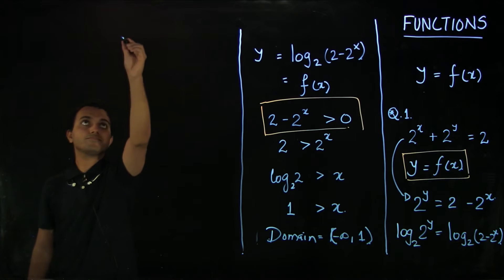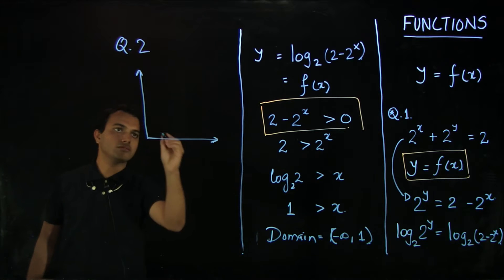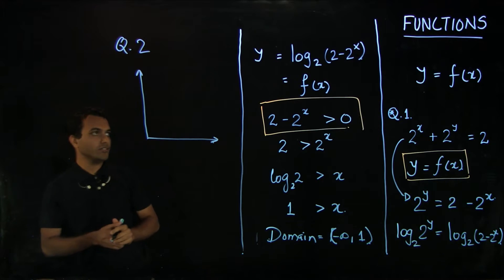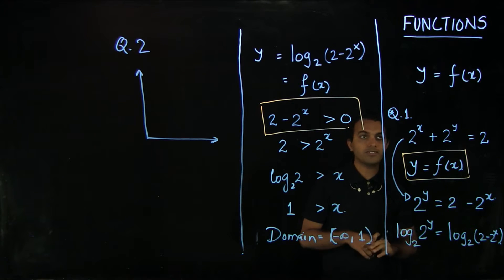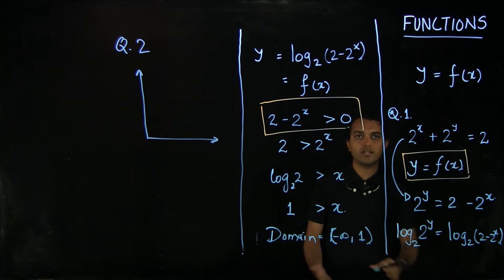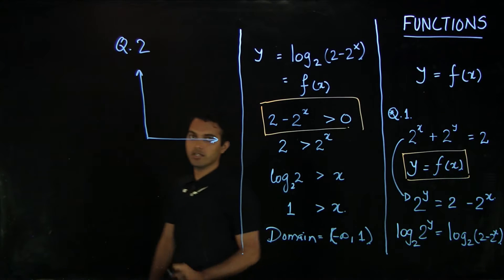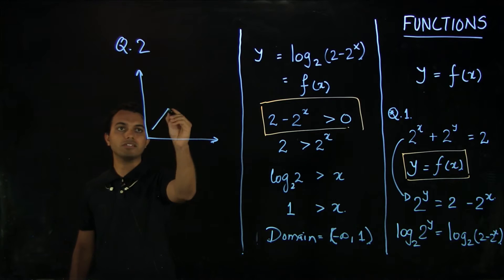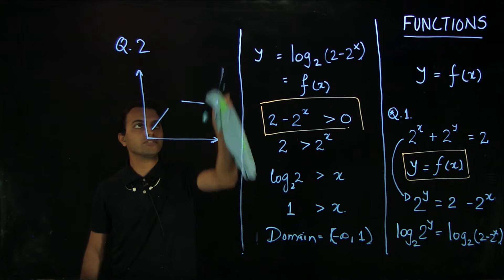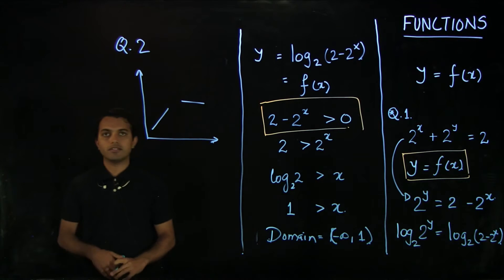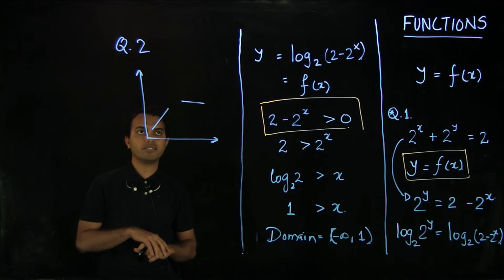Let us consider another question where you are given the graph of a function. If you remember the examples from the previous time, we were dealing with functions where we were given explicitly what the function was. But now we saw one place where we had to come up with an equation, and one place where we are just dealing with a graph. Let us say this is a representative graph of a function given to us, and we have to come up with the domain and range.